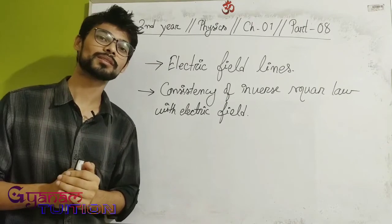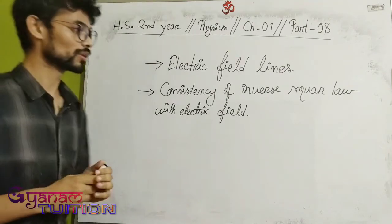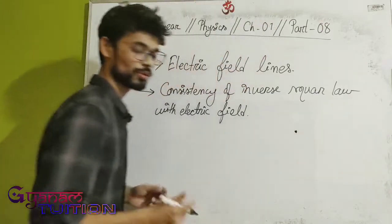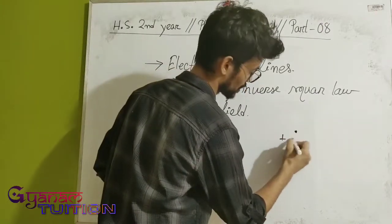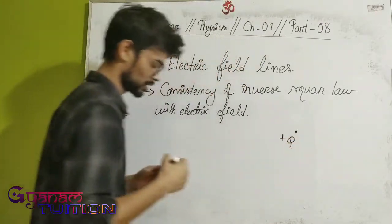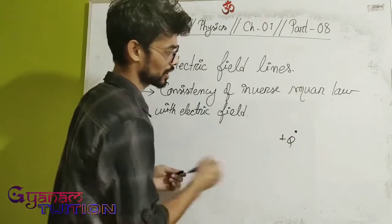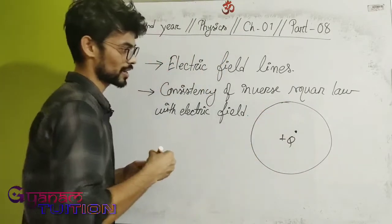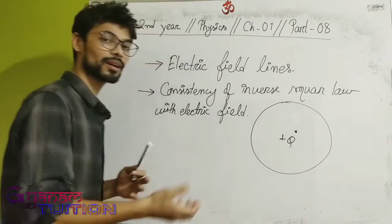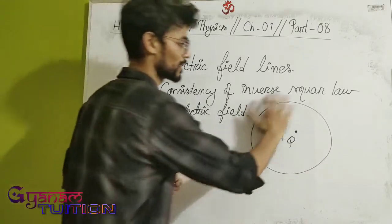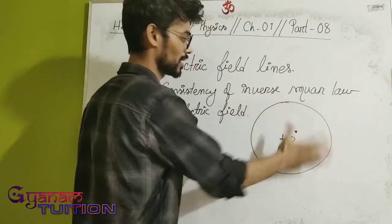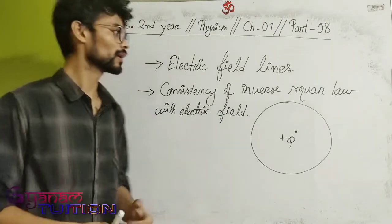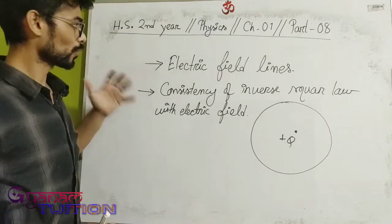In the last class, we discussed the electric field — its direction, the building of the radius, how it differs depending on direction, and the size of the area from the center of the surface.